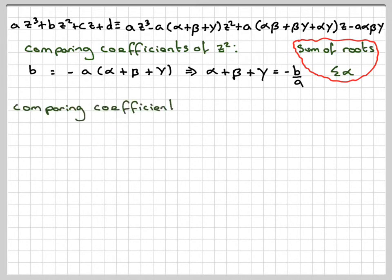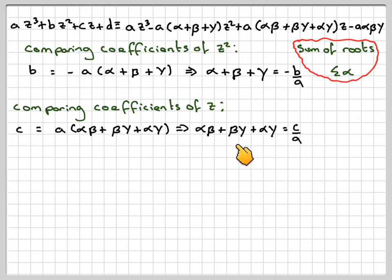Comparing coefficients of z, we've got z on this side is c, and then z on this side is a times alpha beta plus beta gamma plus alpha gamma. So alpha beta plus beta gamma plus alpha gamma is c over a.